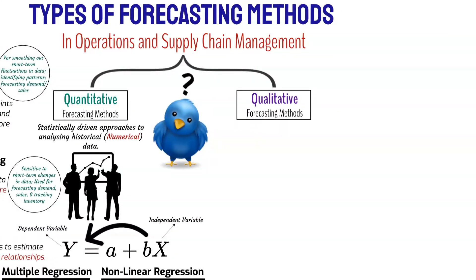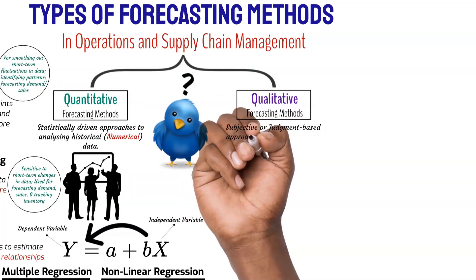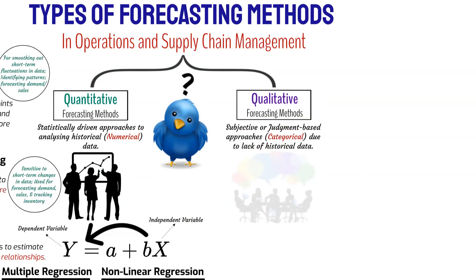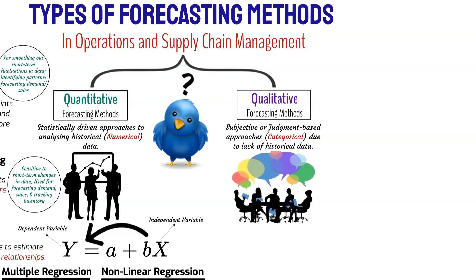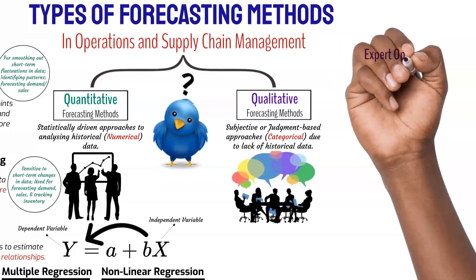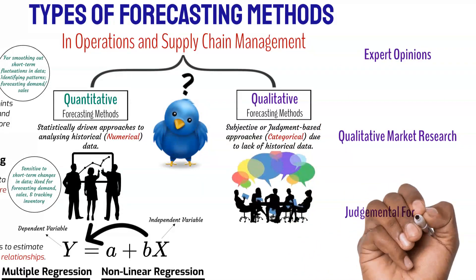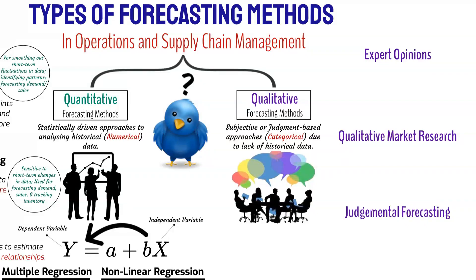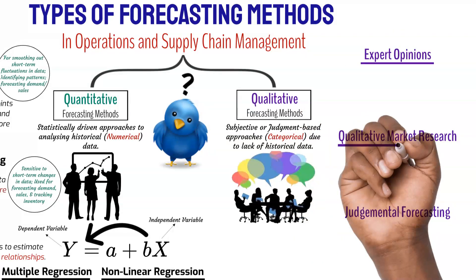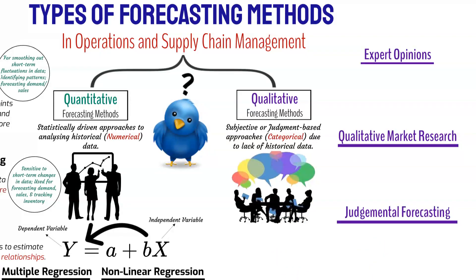Qualitative forecasting methods are subjective and judgment-based approaches that rely on expert opinions, market research, or qualitative data to make forecasts. These methods are employed when historical data is scarce, unreliable, or when the future is influenced by factors that are difficult to quantify. The commonly used qualitative methods are expert opinions, qualitative market research, and judgmental forecasting. These methods are particularly valuable in situations of rapid market changes or when human expertise and understanding of market dynamics are critical for making accurate forecasts.